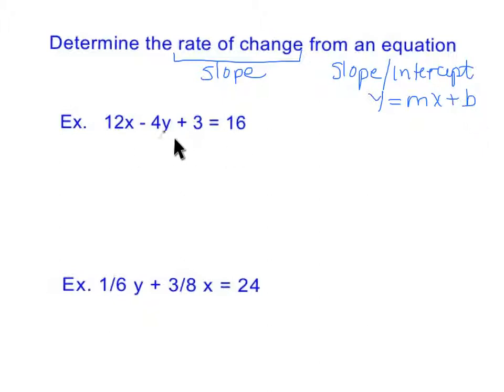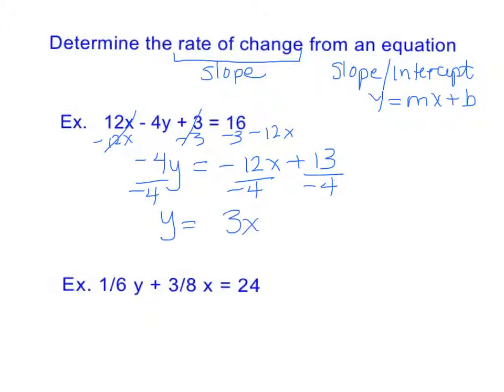So what I want to do is put this equation so that it says y equals. So you can see I'm going to need to move the 12x to the other side of the equation, and the 3 to the other side, and then probably divide by negative 4. So I'm going to do negative 12x minus 12x, minus 3, minus 3. And I have negative 4y equals negative 12x plus 13. And then I'm going to divide all the way through by negative 4, and I have y equals 3x minus 13 over 4. So looking at y equals mx plus b, the m is 3. 3 is the rate of change.